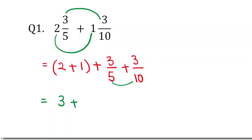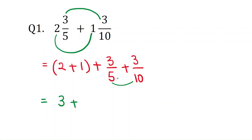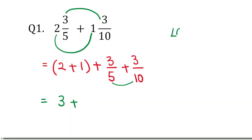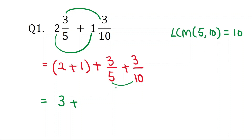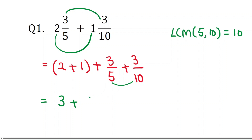For the fractions, we have to make the denominators the same. The denominators are 5 and 10, so the LCM of 5 and 10 is 10. The common denominator is 10. To make 3/5 into a fraction with denominator 10, we use an equivalent fraction: multiply 3/5 by 2/2, plus 3/10.